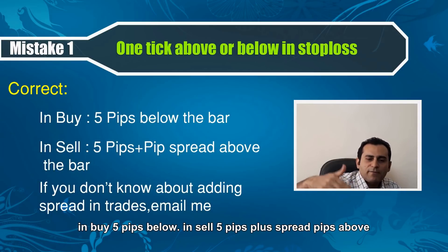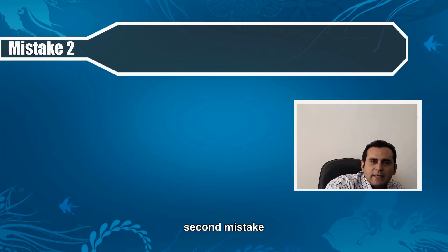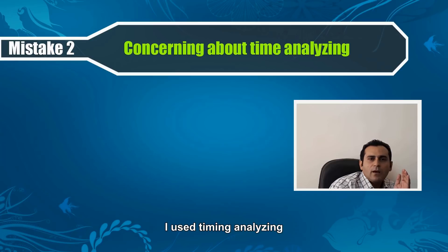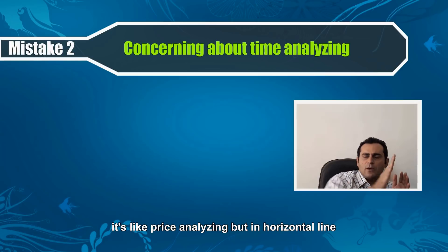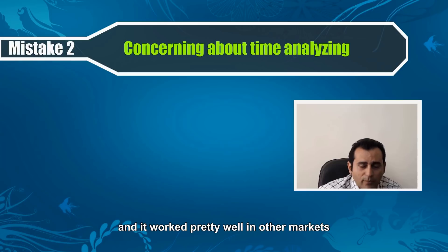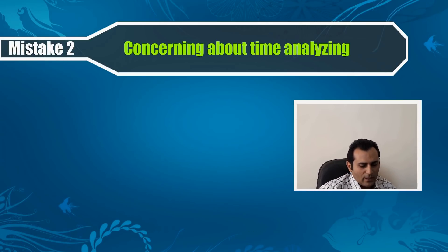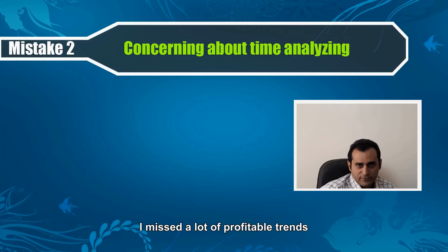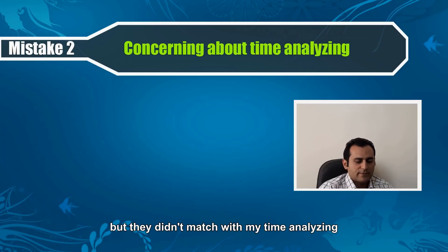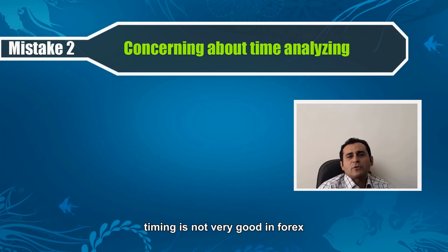In buy: five pips below. In sell: five pips plus spread pips above. Second mistake: when I was learning to analyze those markets, I used timing analysis. It's similar to price analysis but in the horizontal line. It worked pretty well in other markets, but when I used it in Forex, I missed a lot of profitable trends that matched my price analysis but didn't match my timing analysis.